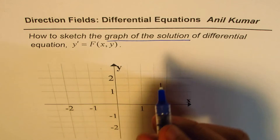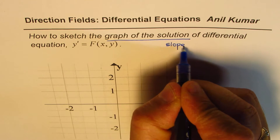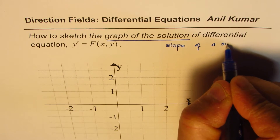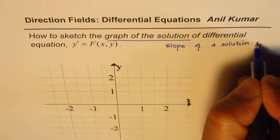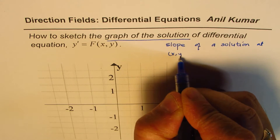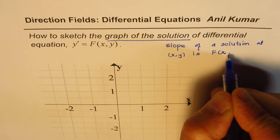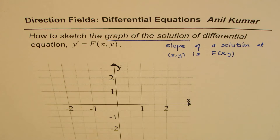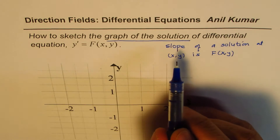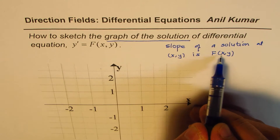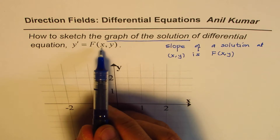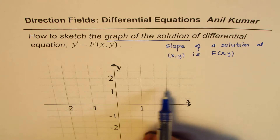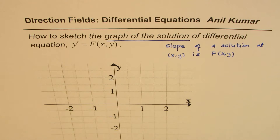The differential equation says that the slope of the solution at (x,y) is f(x,y). This is a very important concept — the equation gives us the slope at each and every coordinate point, and that can help us sketch the graph of the solution even without explicitly knowing the function or finding the solution of the equation.